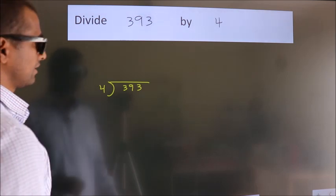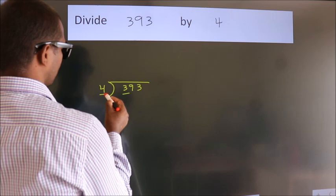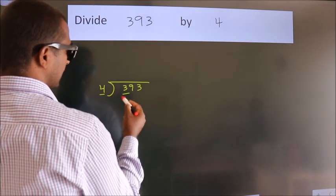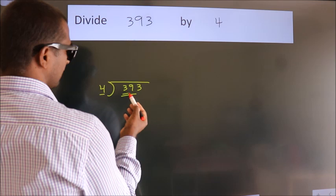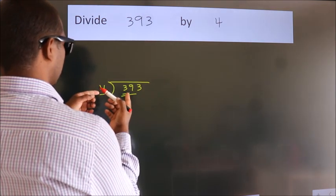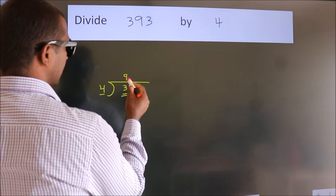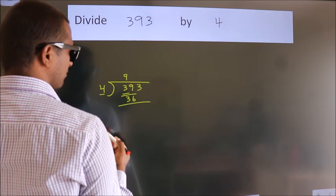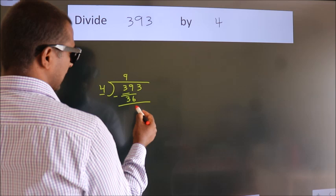Next. Here we have 3, here 4. 3 smaller than 4. So, we should take 2 numbers. 39. A number close to 39 in 4 table is 4 9s 36. Now, we should subtract. We get 3.